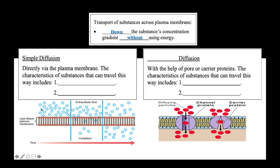This substance directly crosses the plasma membrane from the extracellular fluid into the cytoplasm. Only certain substances with certain characteristics can travel this way. This includes if the substance is non-polar — it becomes lipid-soluble. And since the plasma membrane is made up of a phospholipid bilayer, that is why non-polar substances can simply cross the plasma membrane.